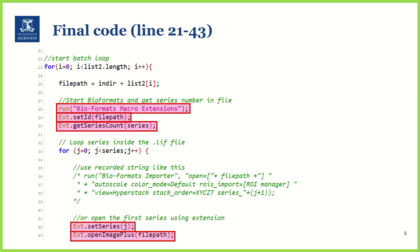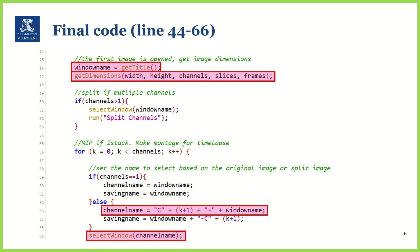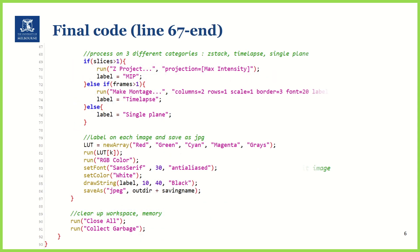The next important thing we learned was the BioFormat macro extensions. Using the ext.getSeriesCount function, we can find out how many series are inside our image. And we can open the image using ext.setSeries and ext.openImagePlus extensions. We also looked deeper at how to manage split images using dimensional information via the getDimension function, and using the image window name to recreate strings. The highlight of the last part was learning how to add labels on our image using setFont, setColor, and drawString functions.